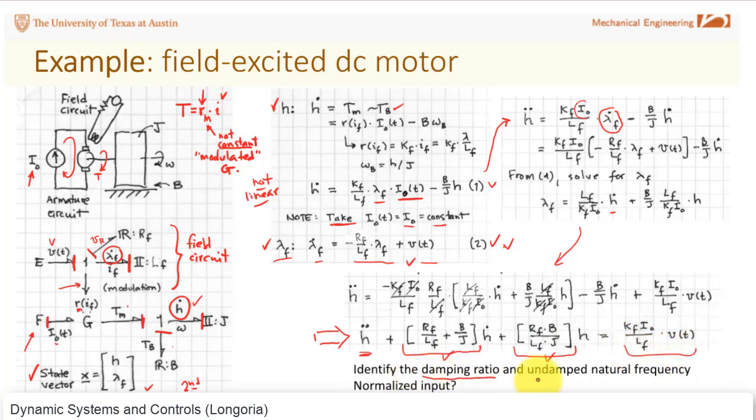So a little exercise - identify the damping ratio, identify the undamped natural frequency, and the normalized input. But as you can see, a system that's seemingly very complex can be shown to be a nice linear second order equation, and now all of the methods that we've talked about in terms of the solutions are applicable to this problem.